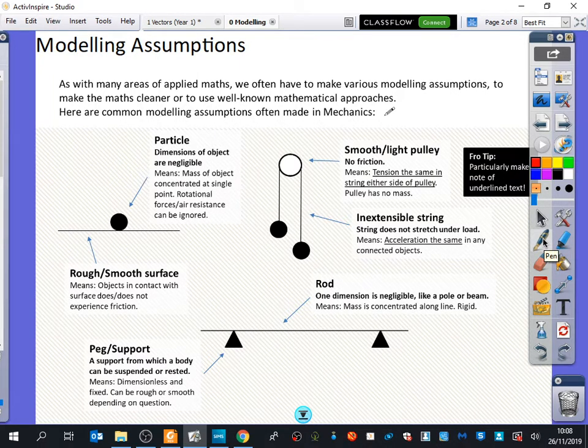When we talk about things in mechanics, we often get lots of written information at the beginning that talks about a model. And this is perhaps the best time to talk about these modelling assumptions. We may talk about them again when we do forces. But these are some things I wanted you to have printed on a piece of paper so you can refer back to them when you're looking at questions. So for modelling assumptions, it says, as with many areas of applied maths, we often have to make various modelling assumptions to make the maths cleaner or to use well-known mathematical approaches. We've already talked about modelling earlier when we said about quadratic modelling and linear modelling. Here are common modelling assumptions often made in mechanics. Now, I'm not expecting you to have all of these memorised immediately, but it's probably worth keeping this document with you when we are doing mechanics because it's always going to be useful to refer back to. And I just want to introduce you to the words now. I will be explaining them again in due time as well.